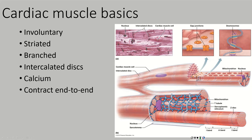In skeletal muscle, calcium comes from the sarcoplasmic reticulum. In cardiac muscle, the sarcoplasmic reticulum is very small compared to skeletal muscle. There is a little calcium stored there that comes out, but the majority of calcium involved in cardiac muscle contraction comes from the extracellular space. Cardiac muscle, like skeletal muscle, contracts end to end using the sliding filament theory with sarcomeres, contracting end to end just as in skeletal muscle.